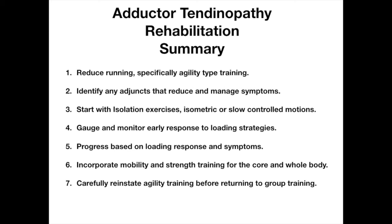In summary: firstly, reduce running — specifically agility-type training. Then identify adjuncts that reduce and manage symptoms such as massage, taping, or the sacroiliac joint belt. Start rehabilitation with isolation exercises, perhaps isometric or slow controlled motions. Gauge and monitor the early response to loading, then progress based on loading response and symptoms. As you progress, incorporate mobility and strength training for the core and whole body, moving away from just focusing on the adductor muscle group. Finally, carefully reinstate agility training before returning to group training.